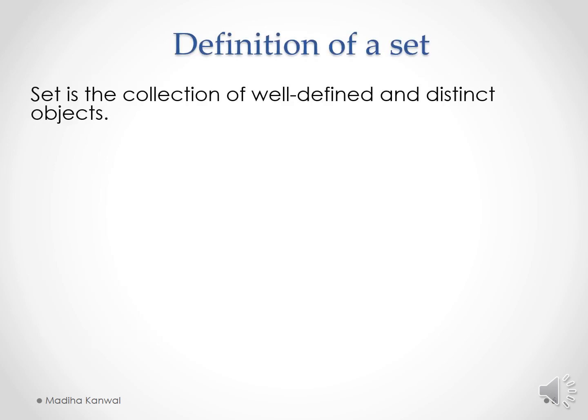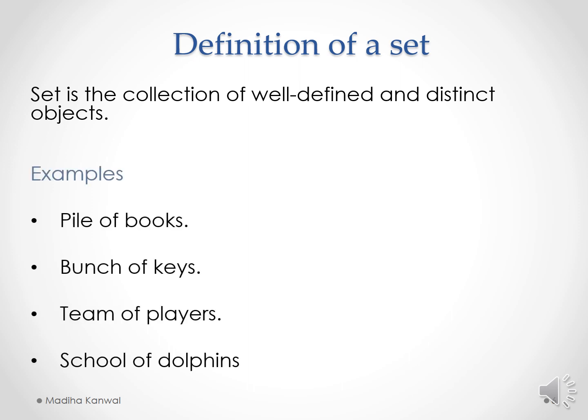The definition of a set is: a collection of well defined and distinct objects. Well defined means that while writing the members of the set, no personal judgment will be involved. Distinct objects mean that each member has a separate identity. For example, a pile of books, bunch of keys, team of players, and school of dolphins are all sets where members are distinct and well defined.